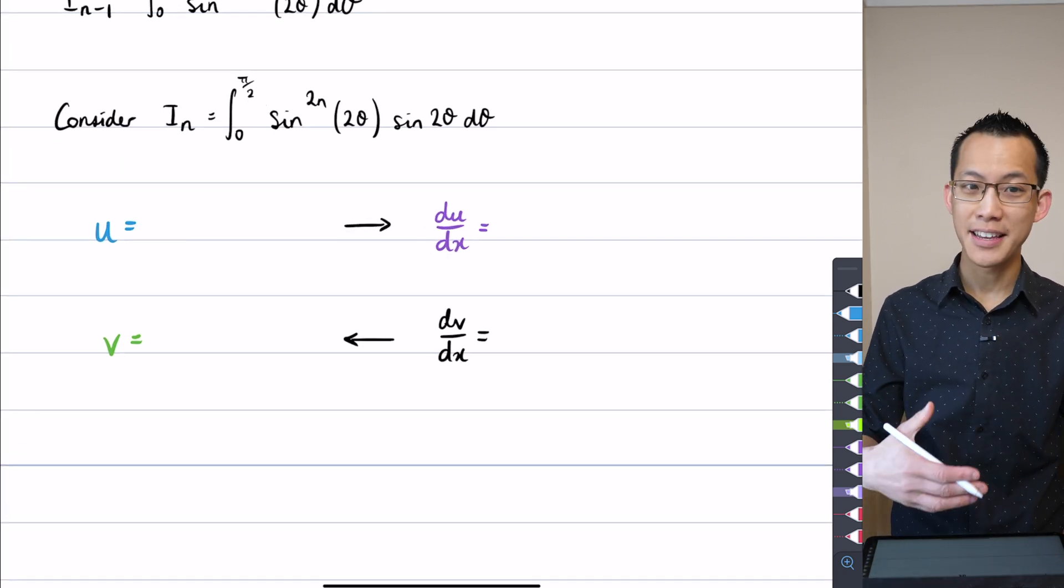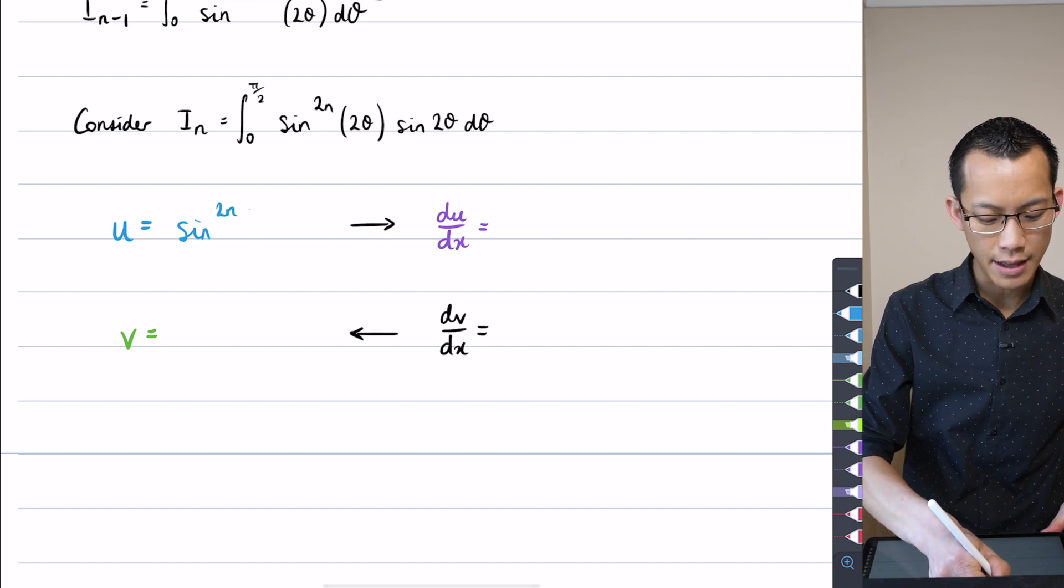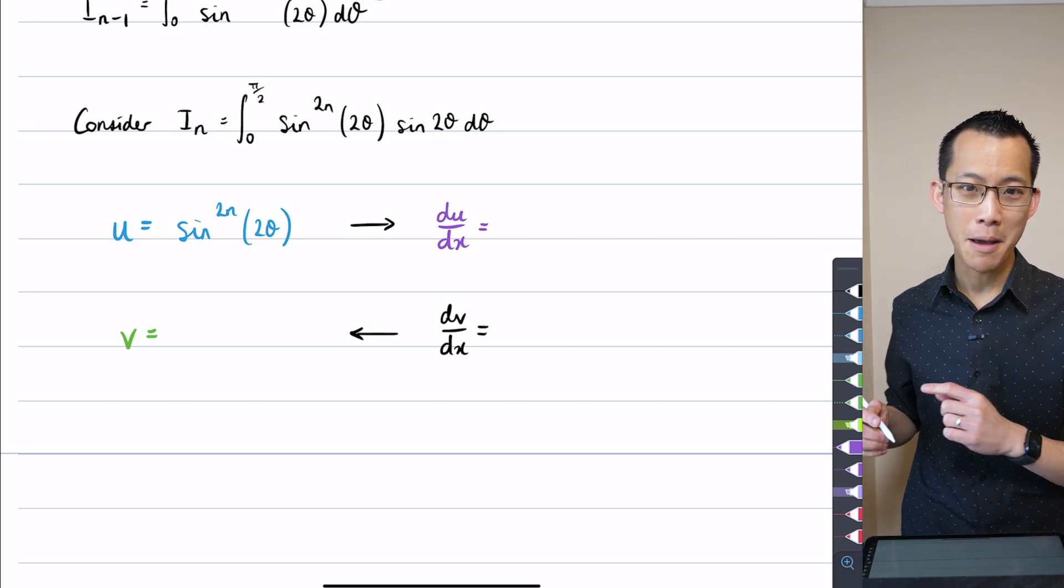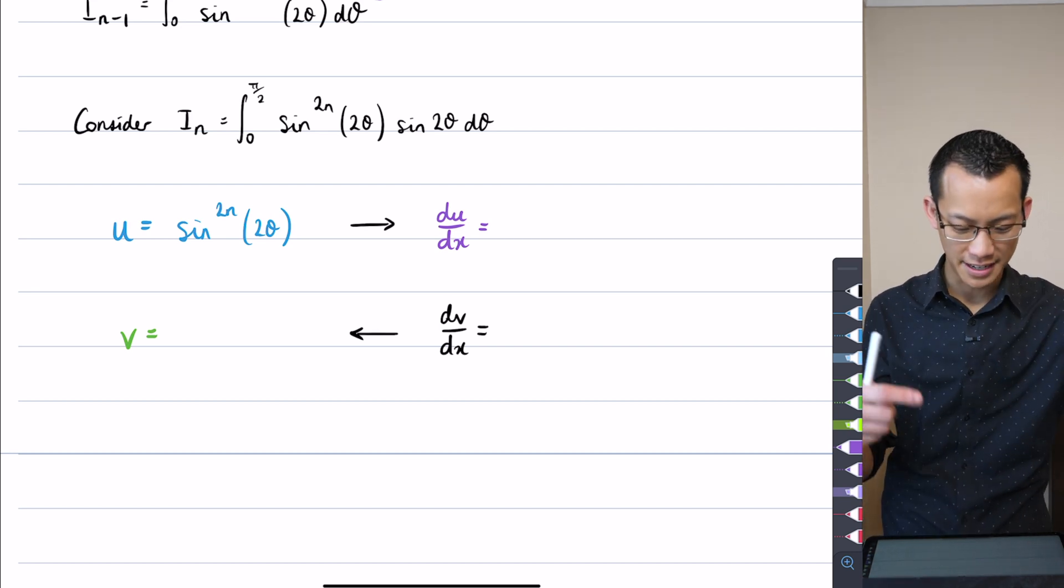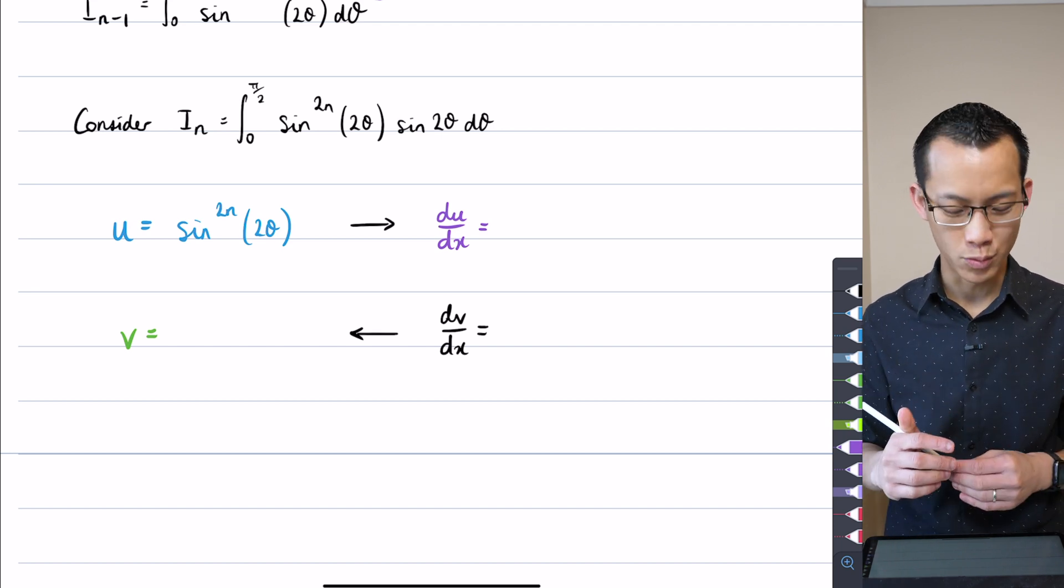So therefore what have I selected as my U? It's going to be this sine raised to the 2N of 2 theta. The reason why I'm coloring this is because when I put this into integration by parts in a second it's going to be a mess of different terms and I just want to help you see what is what.